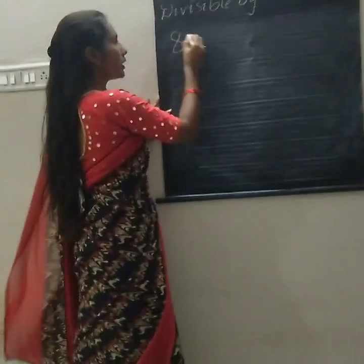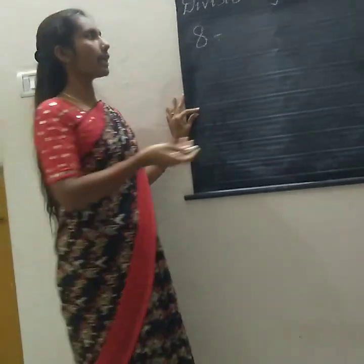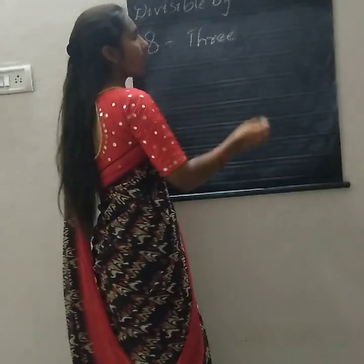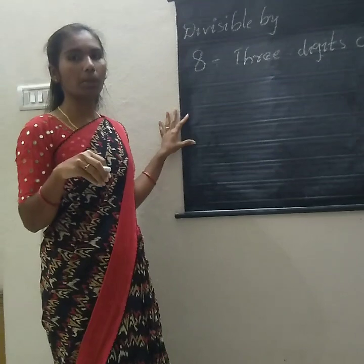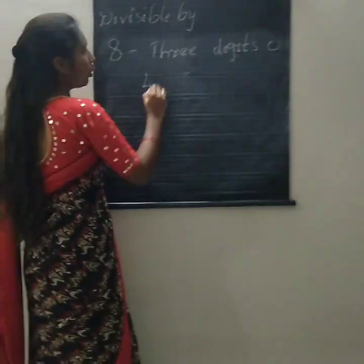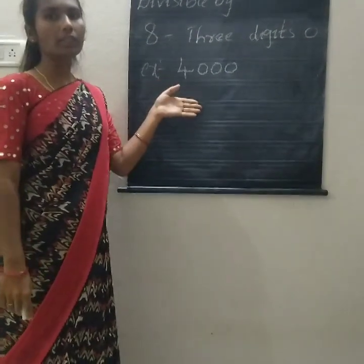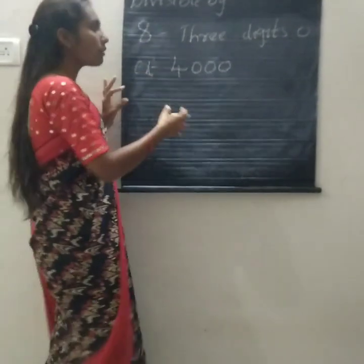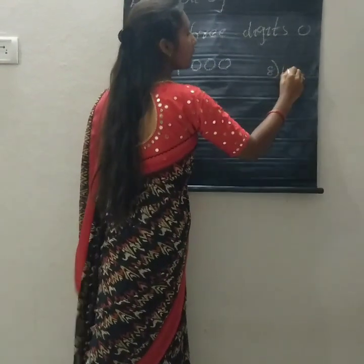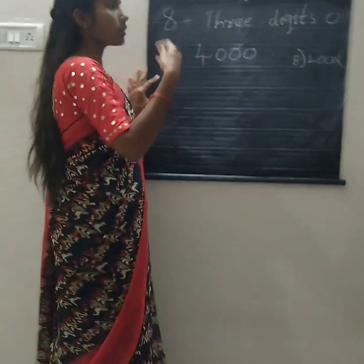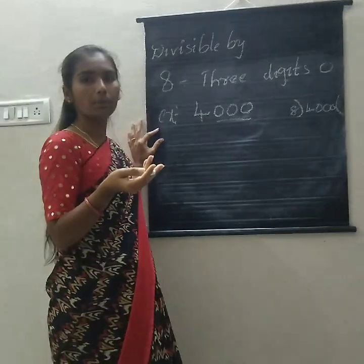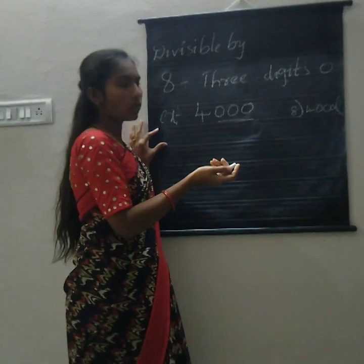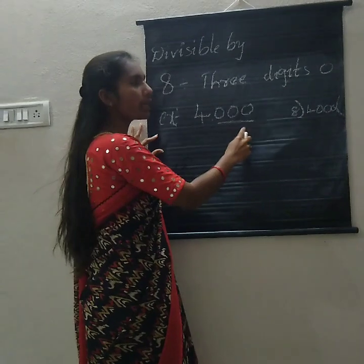Next we are going to check the divisibility of 8 rule. The divisibility of 8 rule is: the last 3 digits should be 0, or the last 3 digits are divisible by 8. Example: 4,000. The last 3 digits are 000, so 4,000 is divisible by 8.